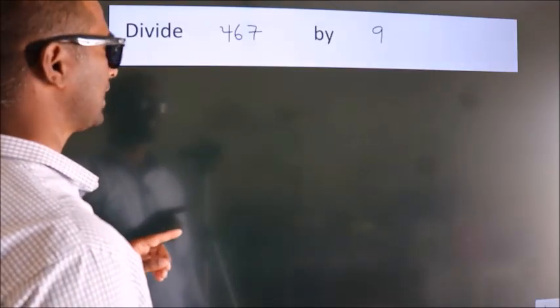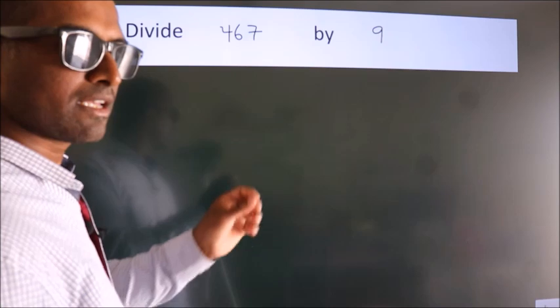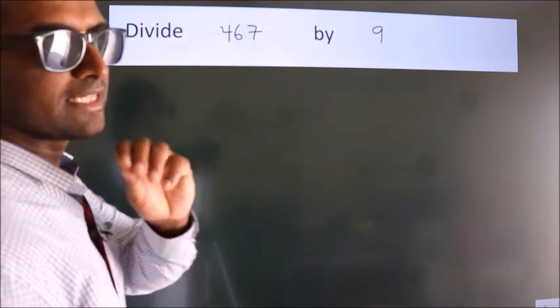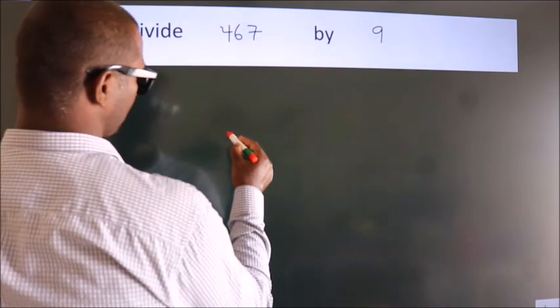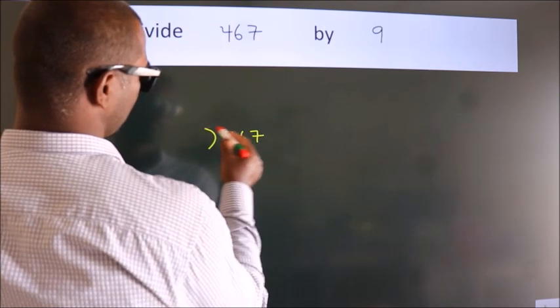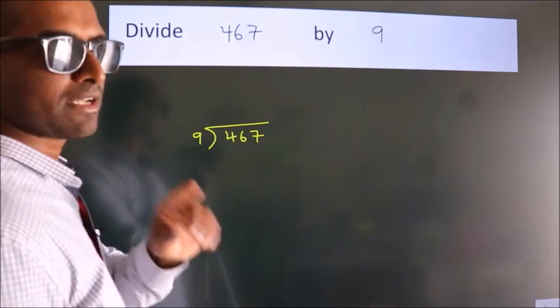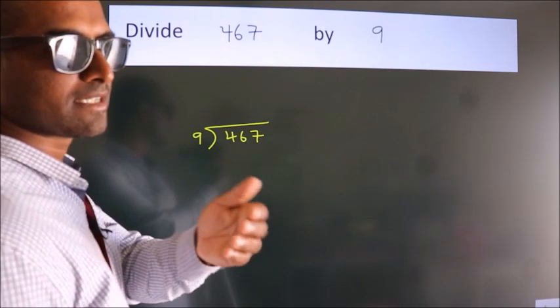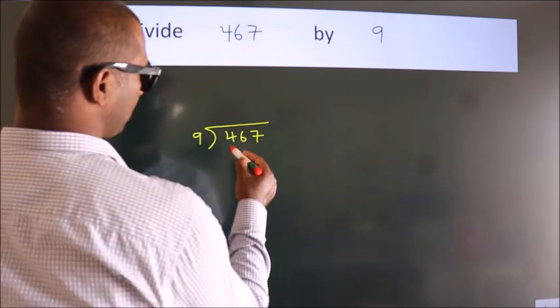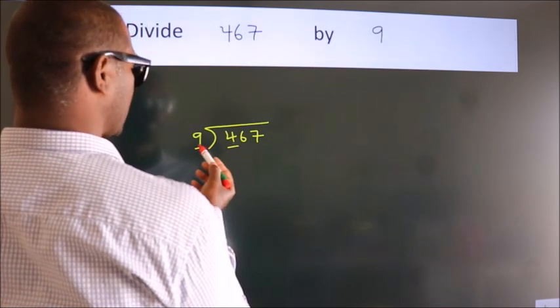Divide 467 by 9. To do this division, we should frame it in this way: 467 here, 9 here. This is your step 1. Next, here we have 4. 4 is smaller than 9,